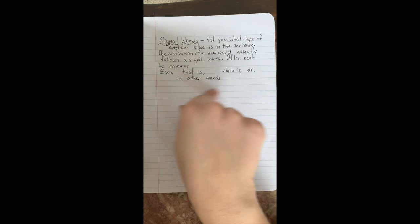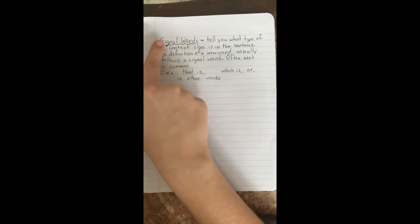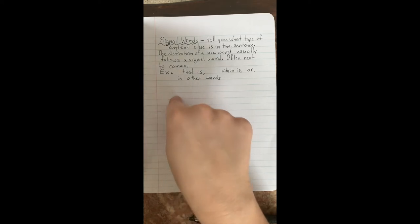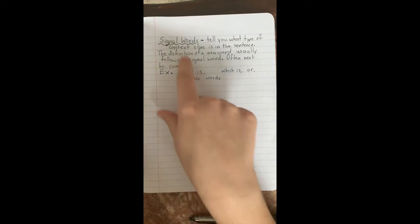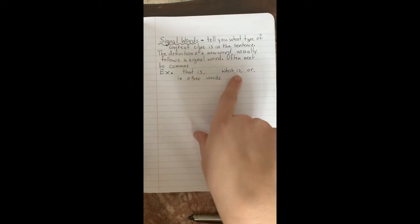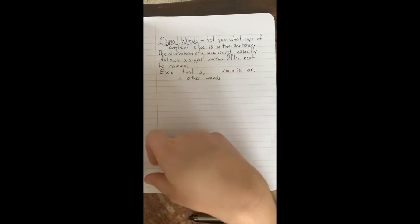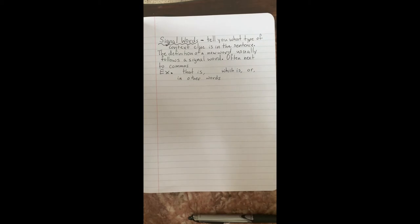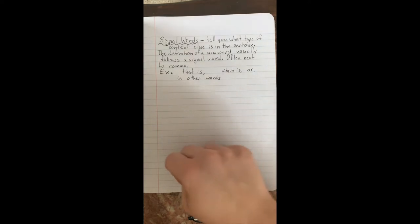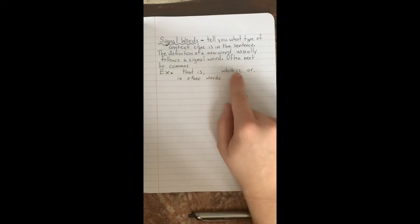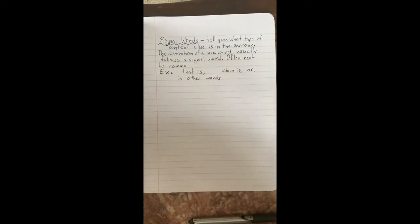Now I've been trying to use some signal words in our Google classroom comments. When I use a tough word, I'll try and put a signal word like that is or which is or in other words next to it to help you guess the meaning. For instance, when I was talking about my new couch, I got it reupholstered. And then I said reupholstered, which is re-covered and made to look nice again.